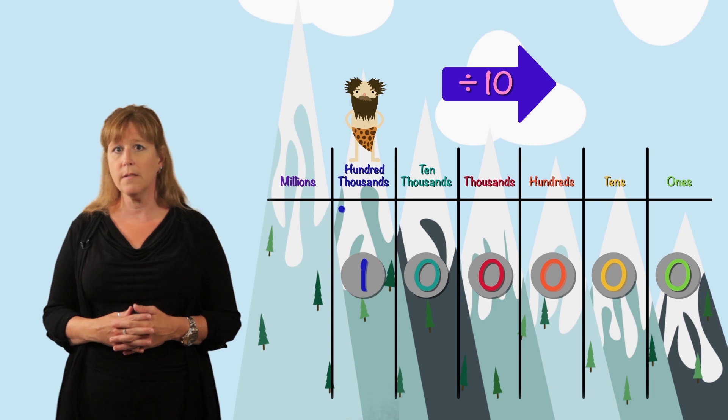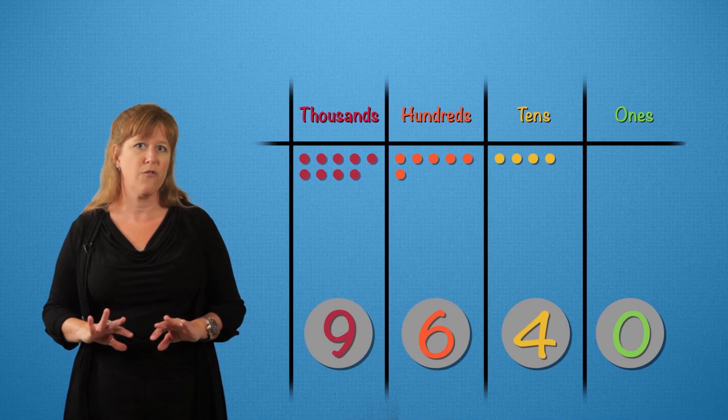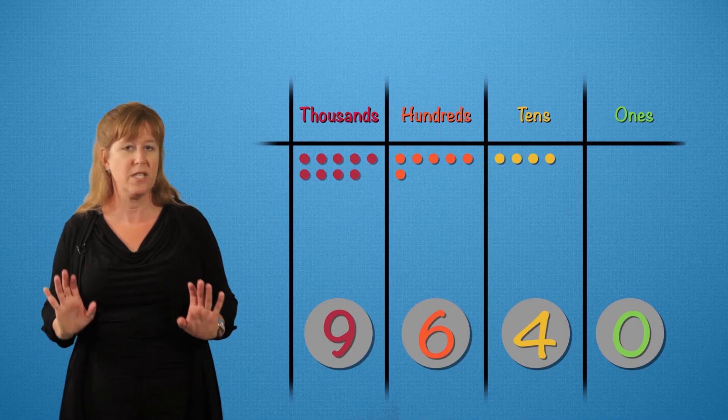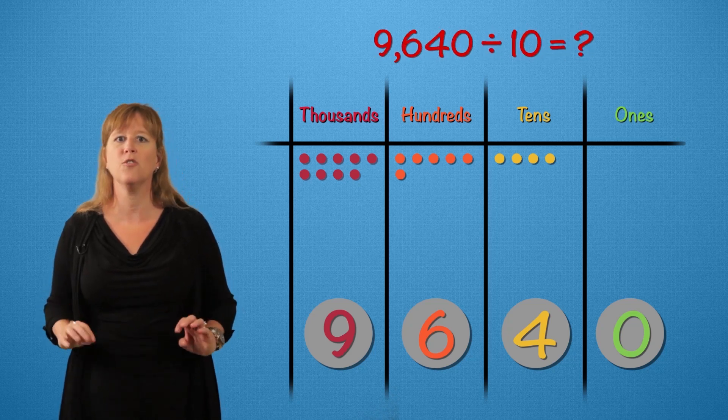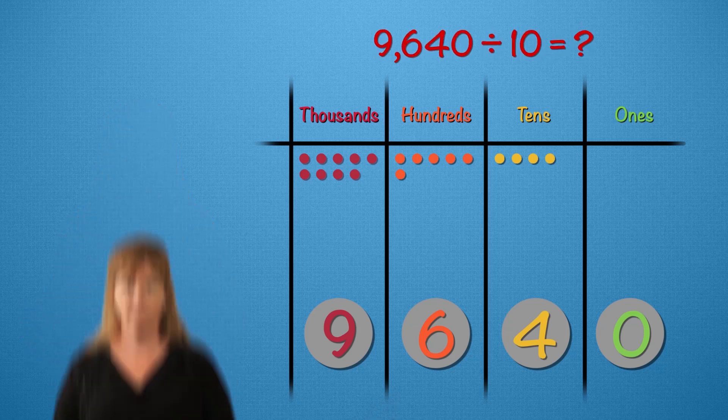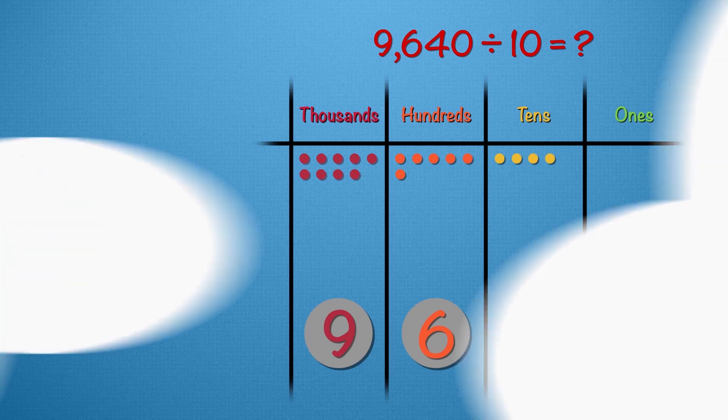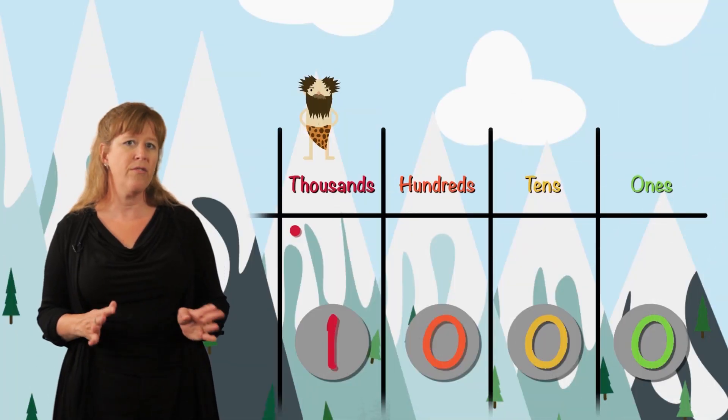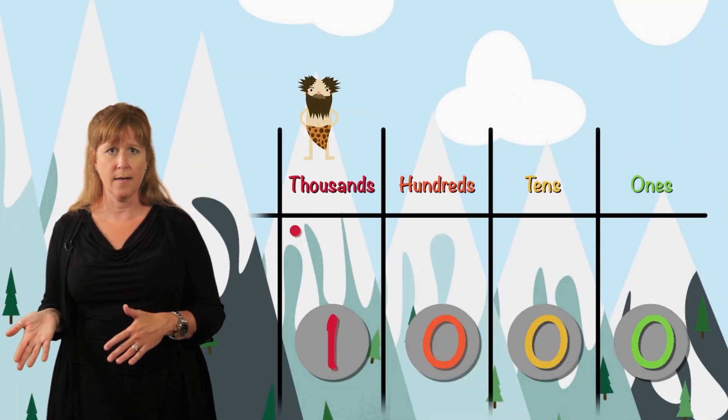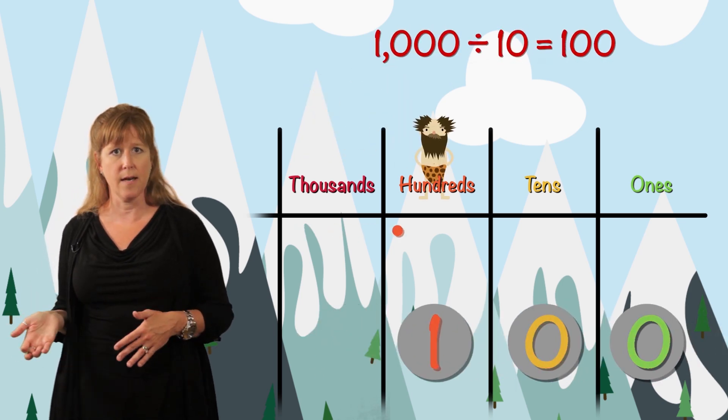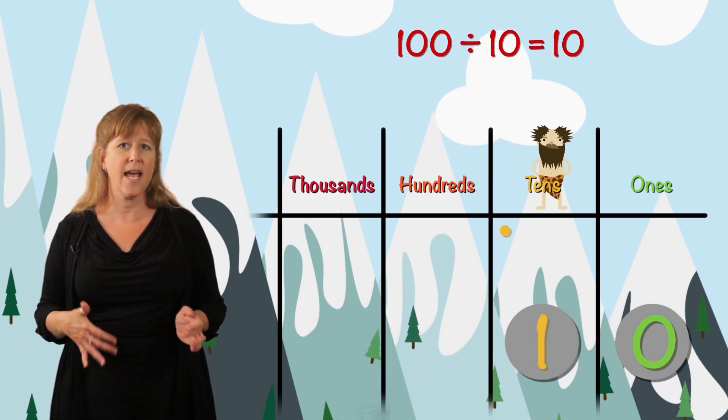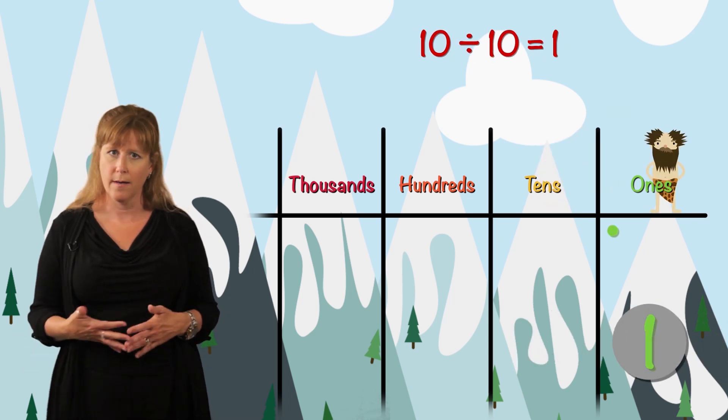Keep going, Kevin. This works for all numbers when we divide by ten. What would nine thousand six hundred forty divided by ten be? One thousand divided by ten is one hundred. One hundred divided by ten is ten. Ten divided by ten is one. That's it. All the way to one million and back.